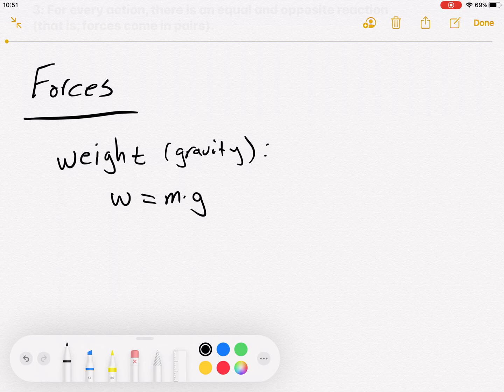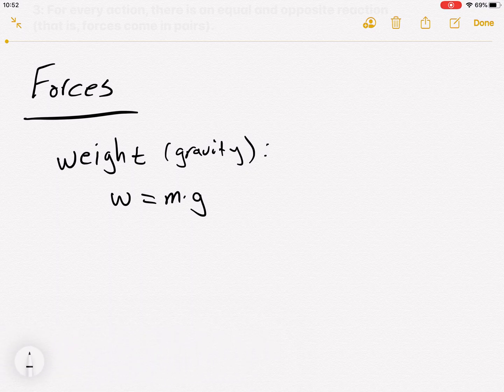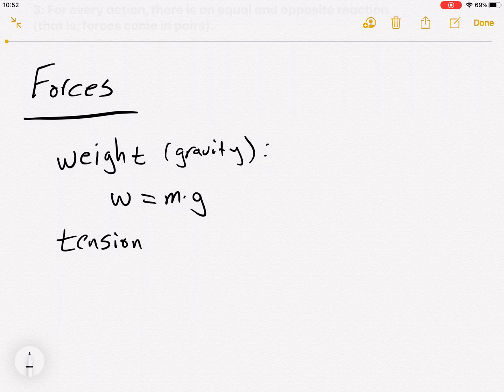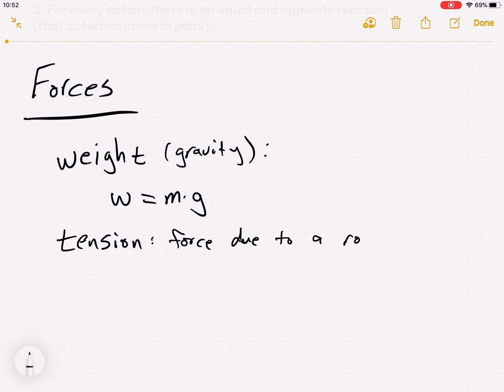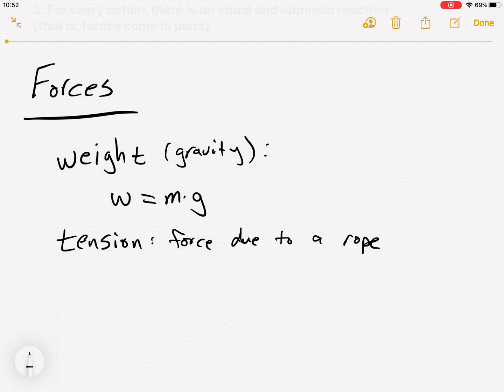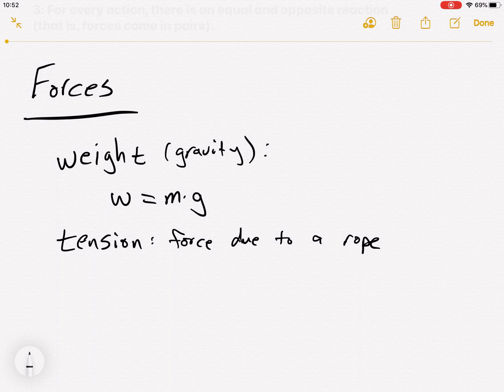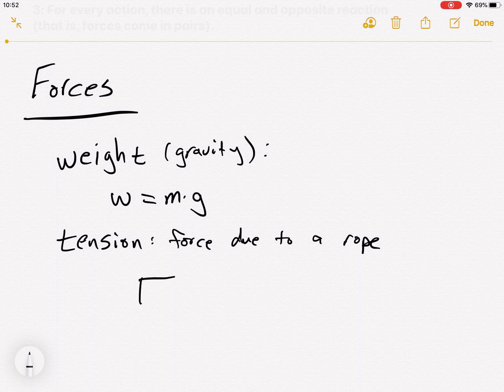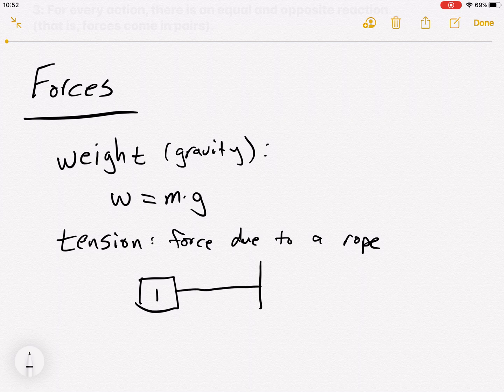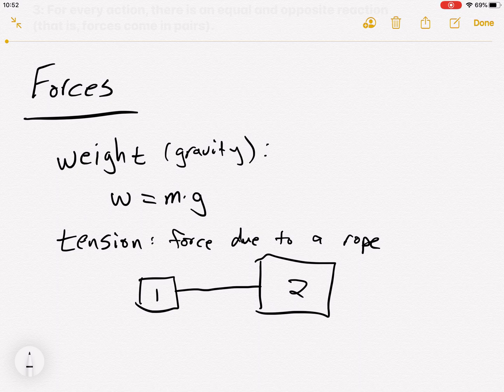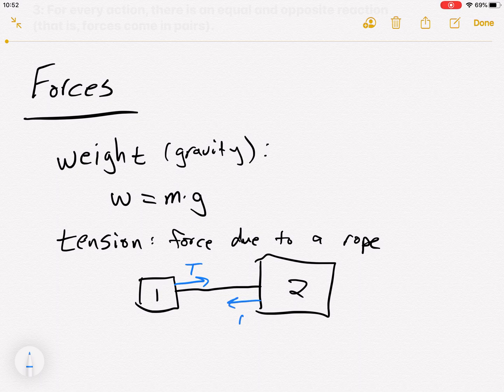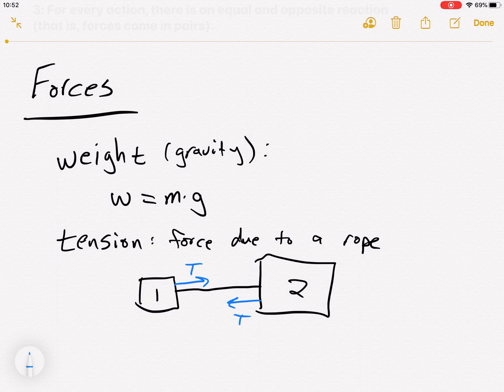Another force we can talk about is the force due to a rope. Right? This is tension. So again, this is the force due to a rope or a chain or a string. It's always a pull and it's always the same on either side of the rope. So if I have two objects connected by a rope that has tension in it, so let's put an object here, object one, and maybe a bigger, like, different object here. If there's tension in this rope, there's tension pulling this way and tension pulling this way. That's the same size on both sides. Right? That's how tension works.